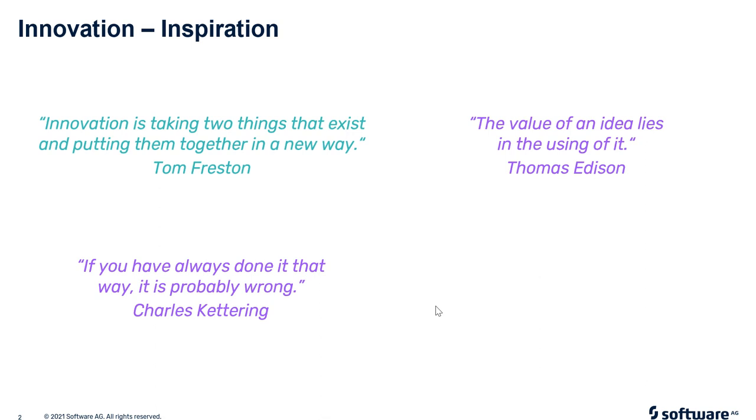A third quote is from Tom Festin, one of the founding members of the team that created MTV. He said innovation is taking two things that exist and putting them together in a new way — which is exactly what he did by combining music, video, and channels to create MTV. I find this powerful because it means part of innovation is just taking a look around us and thinking about how we could do things in a different way. The solutions might not be far from us — we just need to try some combinatoric work.